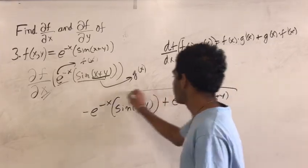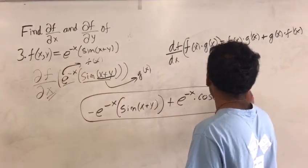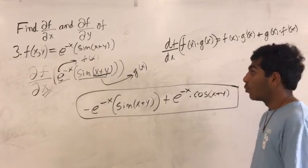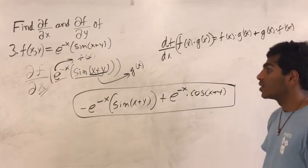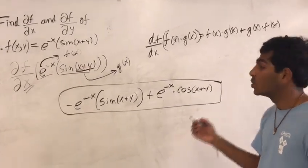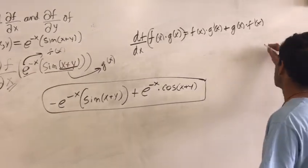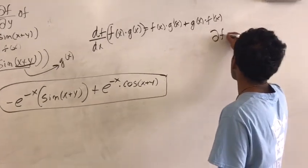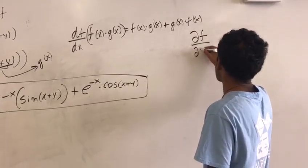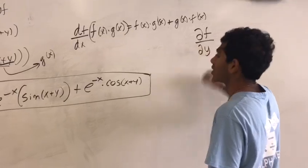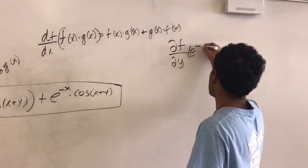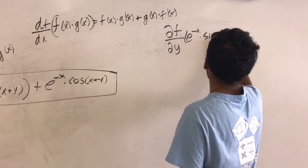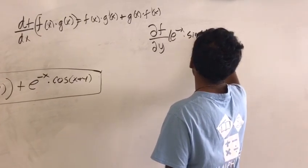So that is the final answer of the partial derivative with respect to x. Now we're done, but we're not done, because we've got to define the y part as well. So I'm going to go ahead and write the partial derivative with respect to y of e raised to negative x times the sine of x plus y.